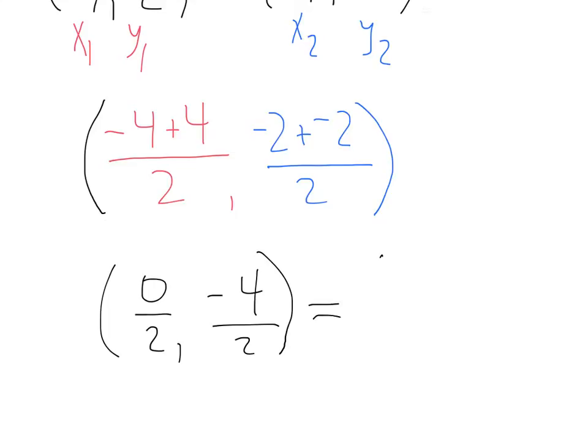So, if I simplify that out one more time, I'm going to get my midpoint of 0 divided by 2, which is 0, and negative 4 divided by 2, which is negative 2.